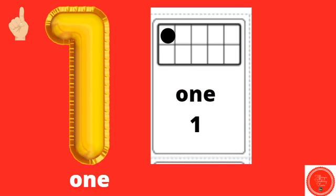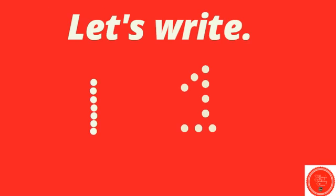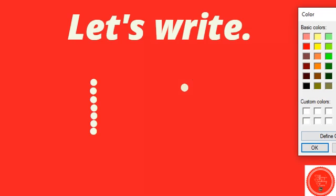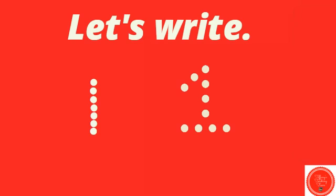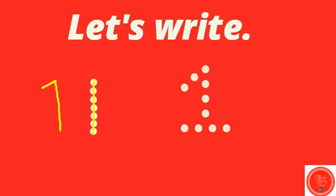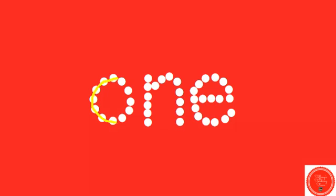Here we have the number one. Let's write. Can you write the number one on your paper or whiteboard? There are two ways you can make the number one. You can make a line going straight down, or you can make your one the other way. The number word is O-N-E. Can you write that on your paper or whiteboard? O-N-E.